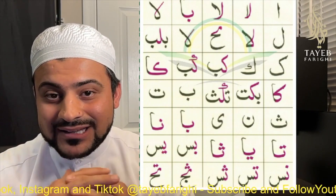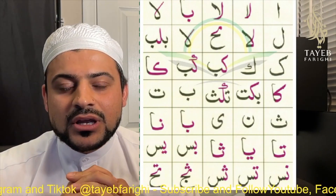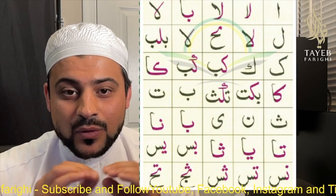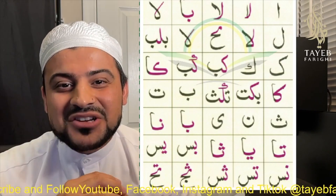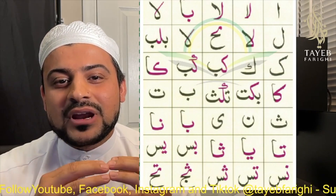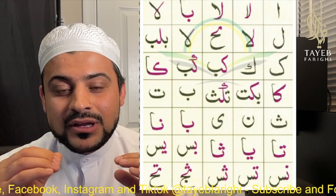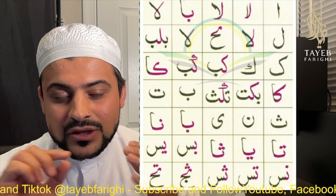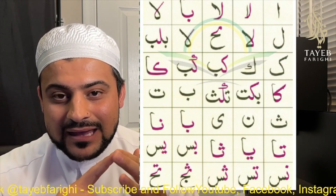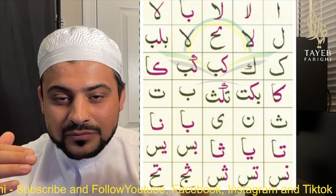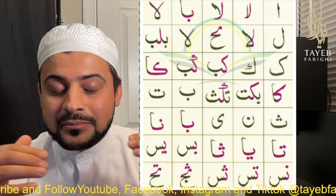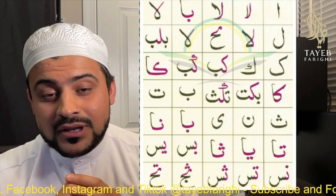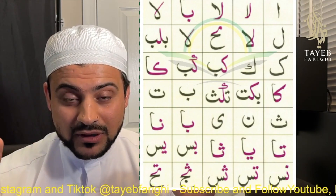In English, if you notice, we have letters and we put them next to each other. We do not connect them unless you write cursive. For example, you say 'apple' — you put A, P, P, L, E — you don't have to connect A with P, and P with L, and L with E. Arabic is different: in Arabic you have to connect multiple letters to make a sound.